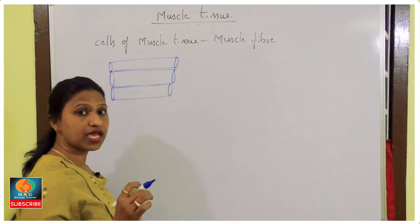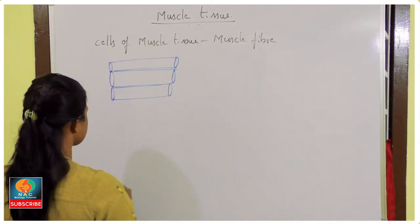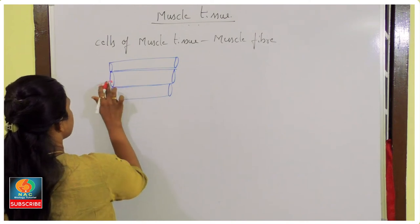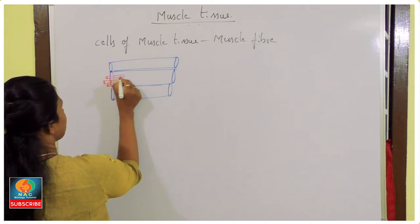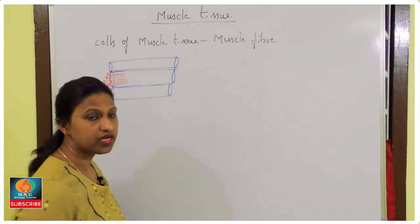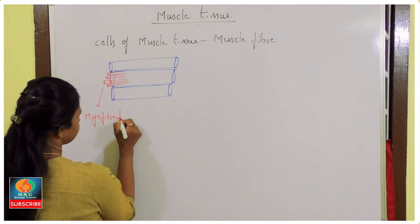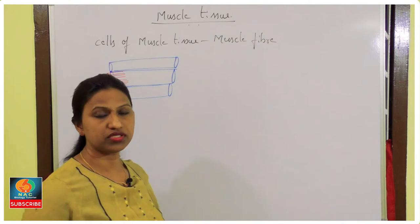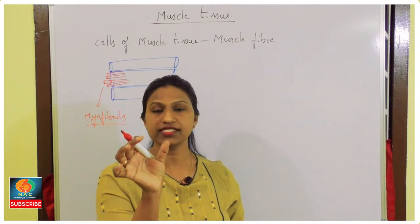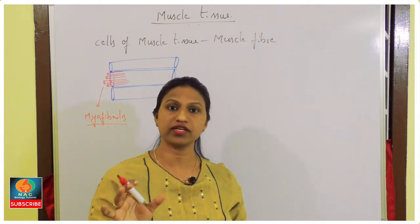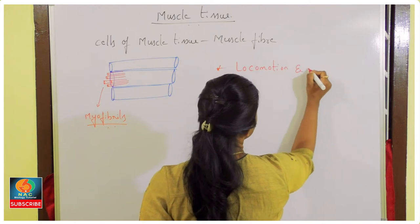Inside a muscle cell, we can see fine thread-like or fiber-like structures called myofibrils. We will study muscular tissue in detail in the upcoming chapter on locomotion and movement. Muscular tissue is associated with locomotion and movement of the body.